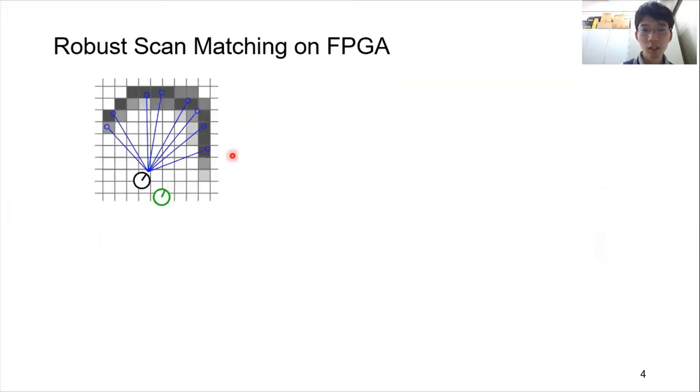As you see in this animation, scan matching is the process to maximize the overlap between a radar scan and a grid map to estimate the motion of the robot.